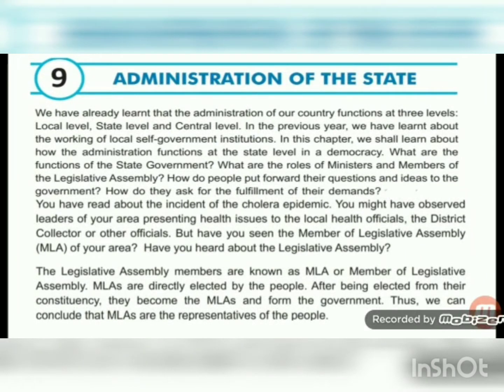We have already learnt that the administration of our country functions at three levels: local level, state level, and central level. In the previous year, we learnt about the working of local self-government institutions. In this chapter, we shall learn about how the administration functions at the state level in a democracy.